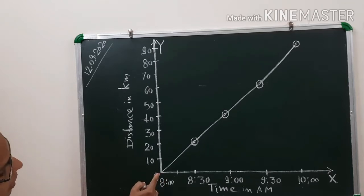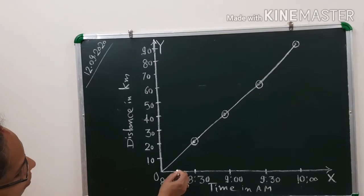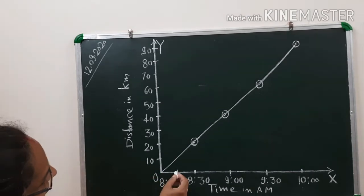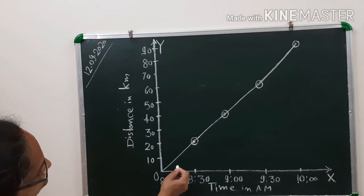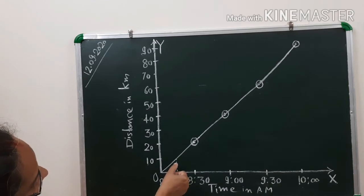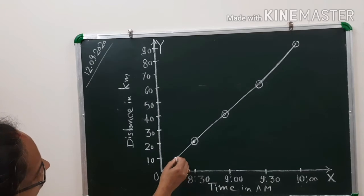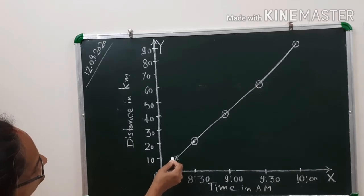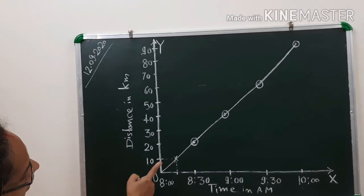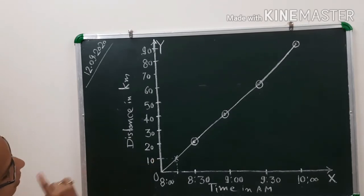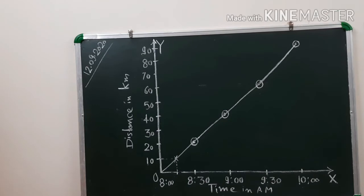You can see here is 8:00 a.m. and here 8:30 a.m., so the midpoint of these two will give you 8:15 a.m. Now we draw one line parallel to the y-axis, and where that line cuts the graph we draw another line parallel to the x-axis. This point falls at 10 km on the distance axis. So we can say that the object is at 10 km till 8:15 a.m.